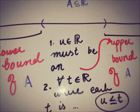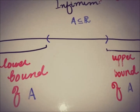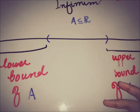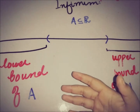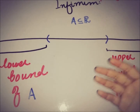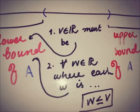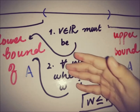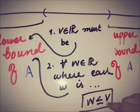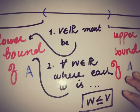Now talking about the infimum of set A: if A is bounded below, then a number v is said to be the infimum of A if it has two properties. First, v must be a lower bound of A, and second, v must be greater than or equal to every possible lower bound of A. Briefly, we call the infimum the greatest lower bound.